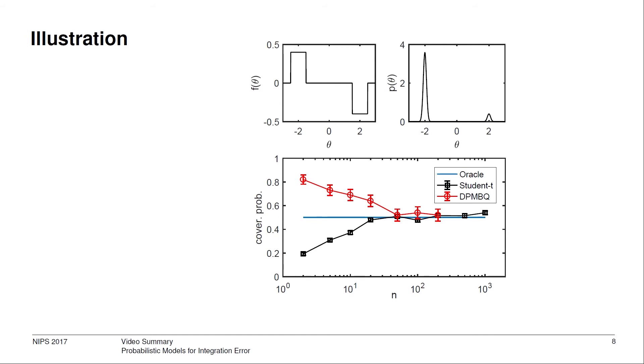For a reasonable choice of the prior, our 50% credible intervals are conservative at small n, with coverage probability greater than 50%, while standard Monte Carlo confidence intervals are obviously going to be overconfident.